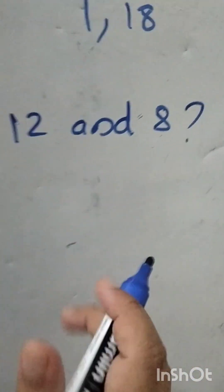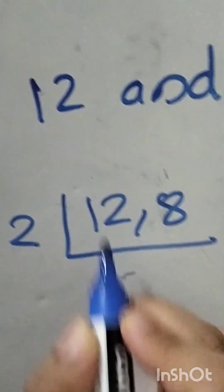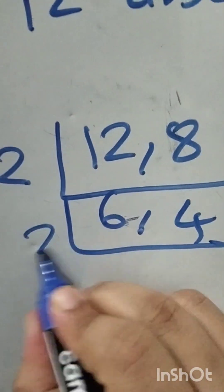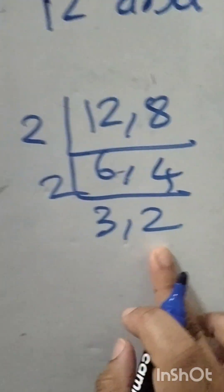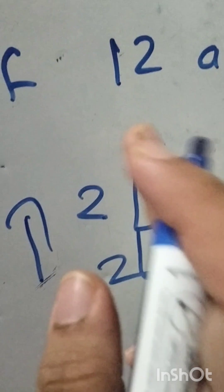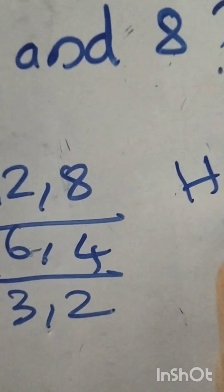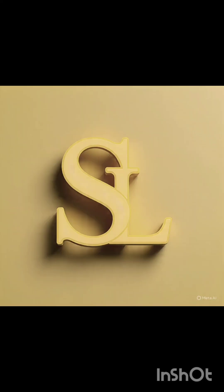Let's find another example: HCF of 12 and 8. Both 12 and 8 can be divided by 2: 12 divided by 2 equals 6, and 8 divided by 2 equals 4. Again divide by 2: 6 divided by 2 equals 3, and 4 divided by 2 equals 2. Now 3 and 2 are prime numbers, so we stop there. Taking the product of the prime numbers in the division lines, 2 and 2, HCF equals 2 into 2, which is 4. In this way we can find the HCF. Thank you.